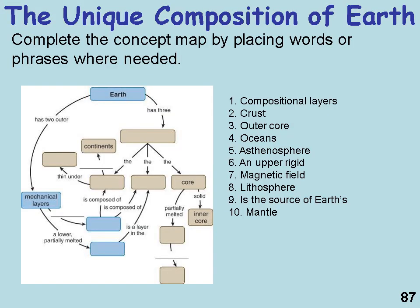Here's a concept map. Earth has three compositional layers: the crust, the mantle, and the core. The core has a solid inner core and a partially melted outer core, which is the source of the Earth's magnetic field. Earth also has two outer mechanical layers: an upper rigid lithosphere and a lower partially melted asthenosphere, both of which are part of the upper portions of the mantle.